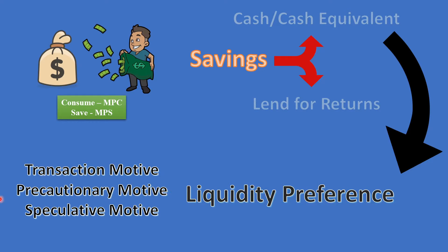Another motive is the precautionary motive, which is to keep cash readily available to meet unforeseen future needs. If there is an accident or other contingencies, you need to have cash readily available. This is the precautionary motive in liquidity preference.